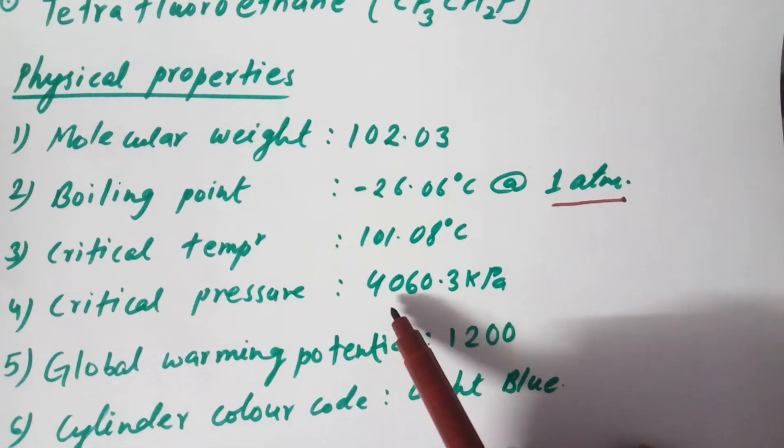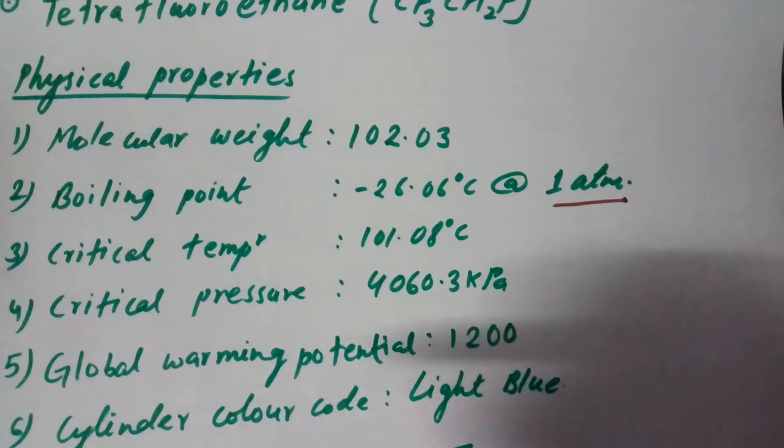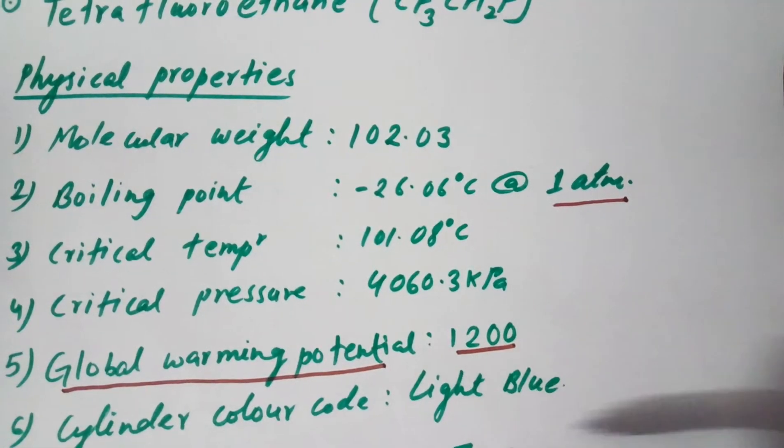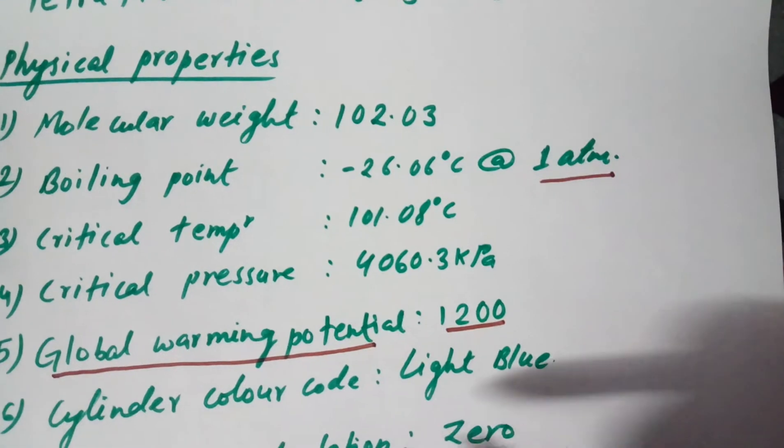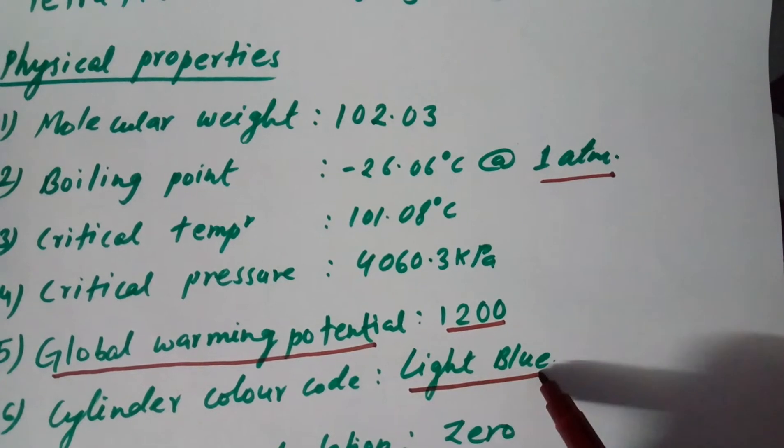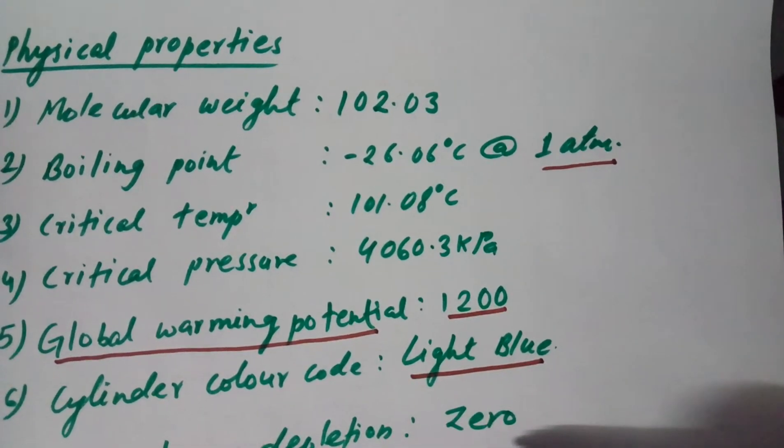Critical pressure is 4060.3 kilopascals. Global warming potential (GWP) is 1200. Cylinder color code is light blue.